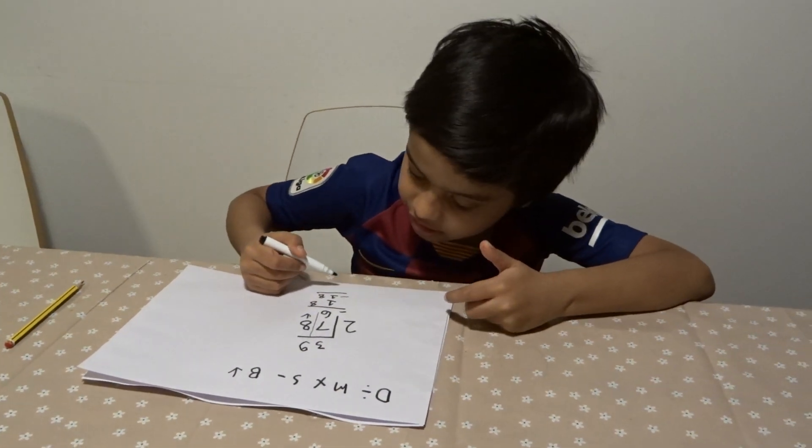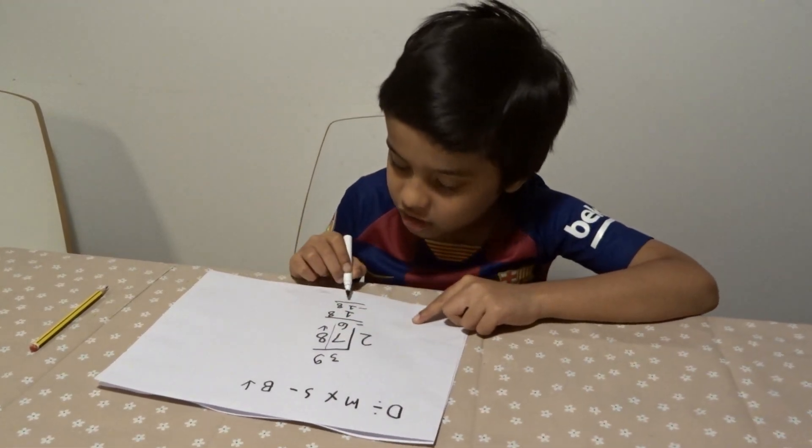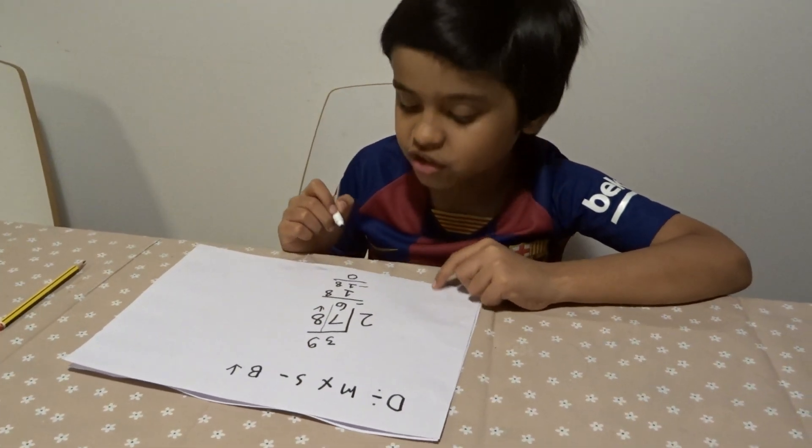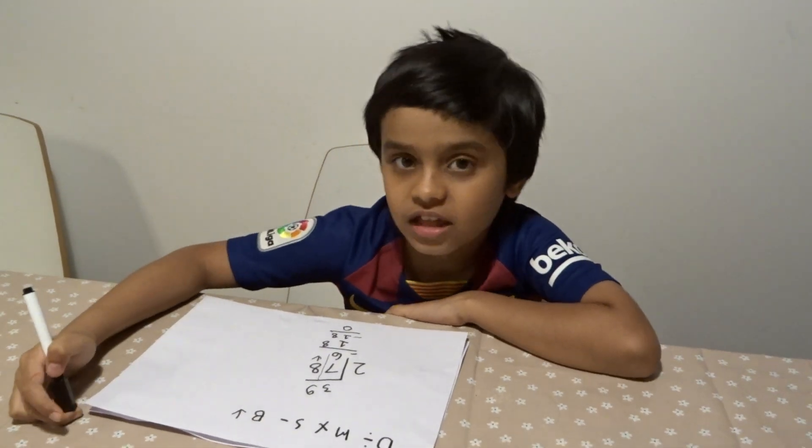Eighteen minus eighteen equals zero. So that's division.